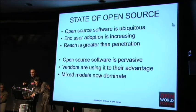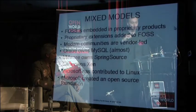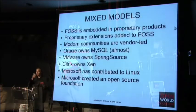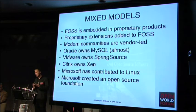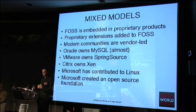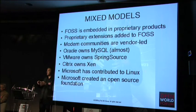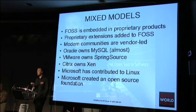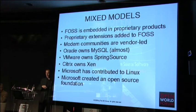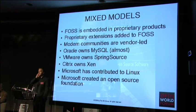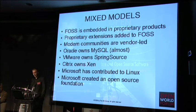Mixed models have come to dominate. Research at the 451 Group into how businesses make money from open source found that the lines are blurring between proprietary and open source software. Open source is embedded in proprietary products, and open-core vendors are providing proprietary extensions added on to open source. Modern communities are increasingly vendor-led. There is also significant M&A activity involving open source companies, though we don't have time to go into detail here.